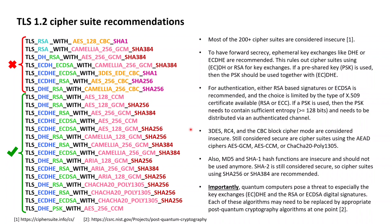Going into the authentication of application data and the cryptographic key derivation with the pseudorandom function PRF, where cryptographic hash functions are required, we need to remember that MD5 and SHA-1 are by now considered insecure. Cipher suites using MD5 or SHA-1 should not be used anymore, but cipher suites using SHA-2 with either 256-bit or 384-bit hash values should be used.